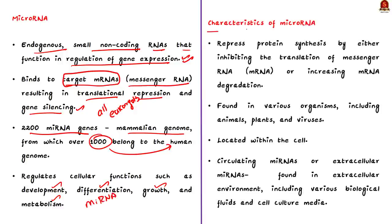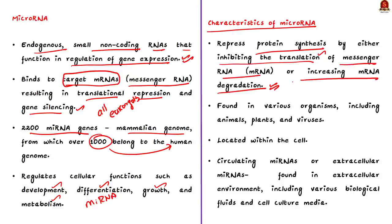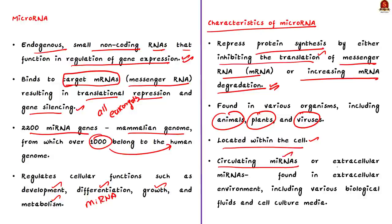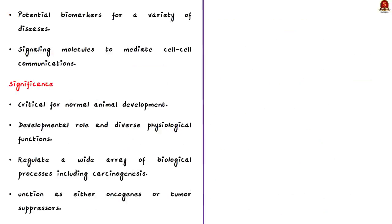MicroRNAs are short RNA sequences that repress protein synthesis by either inhibiting the translation of messenger RNA or increasing messenger RNA degradation. Endogenous microRNAs have been found in various organisms, including animals, plants, and viruses. The majority of microRNAs are located within the cell, but some are circulating or extracellular microRNAs found in the extracellular environment, including various biological fluids and cell culture media. These extracellular microRNAs have been widely reported as potential biomarkers for a variety of diseases and also serve as signaling molecules to mediate cell-to-cell communication.